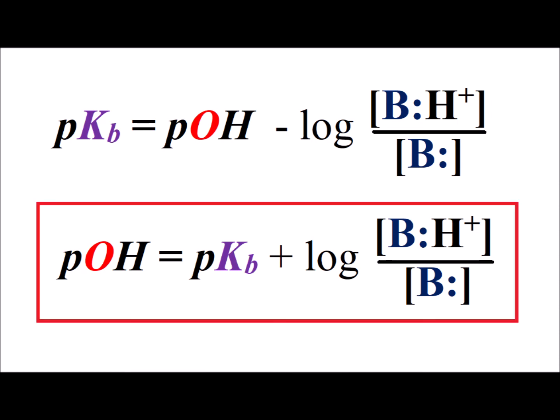If we add the log of the protonated base divided by the concentration of the unprotonated base to each side, we get the equation in the red box, which is our Henderson-Hasselbalch equation but in terms of a weak base instead of a weak acid.